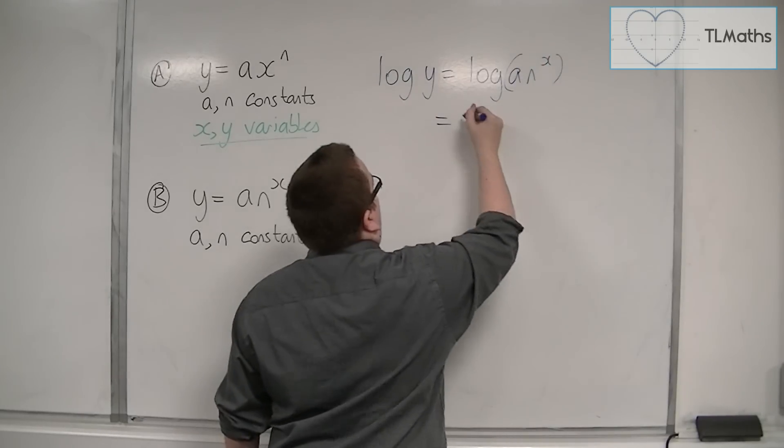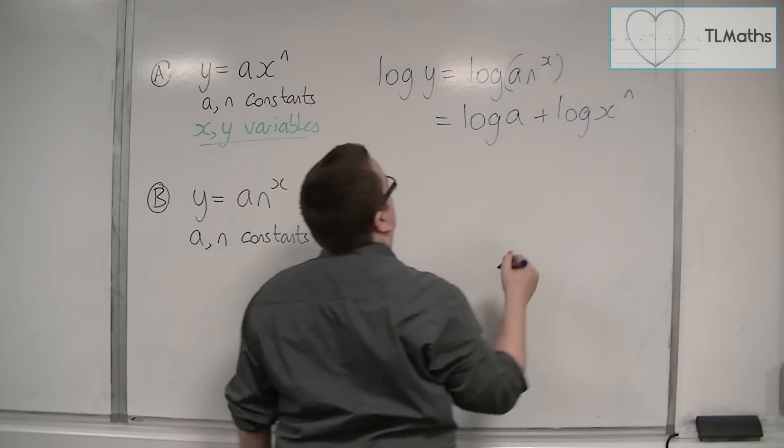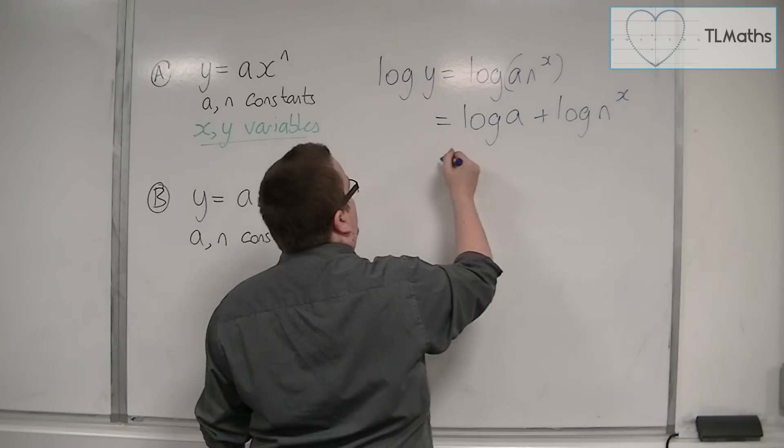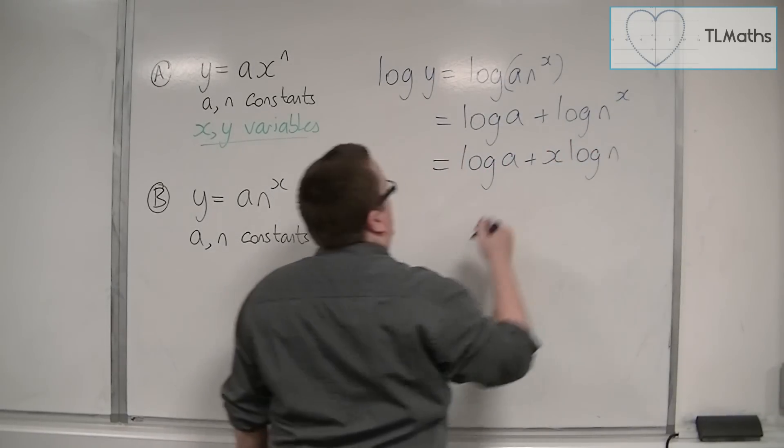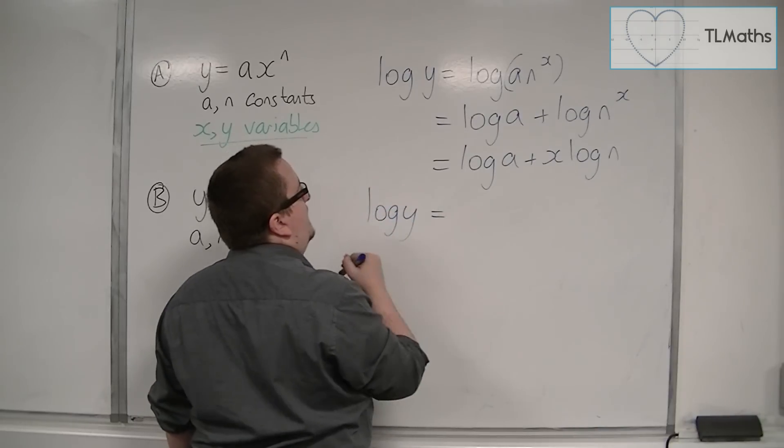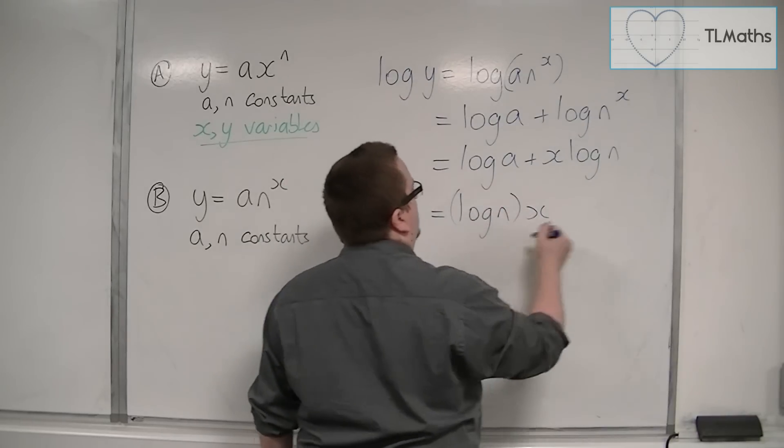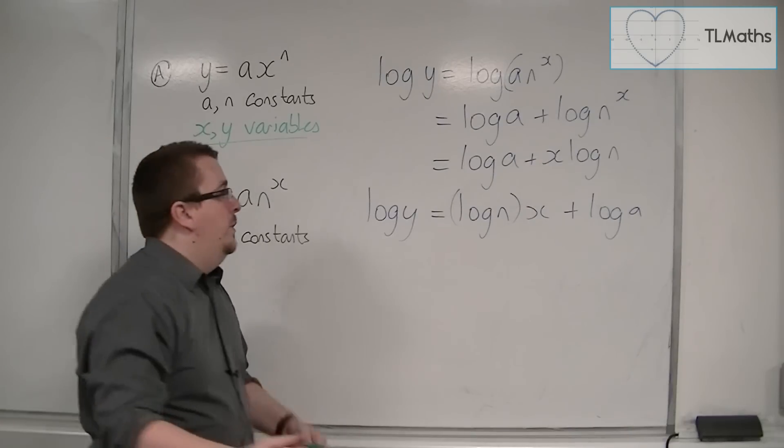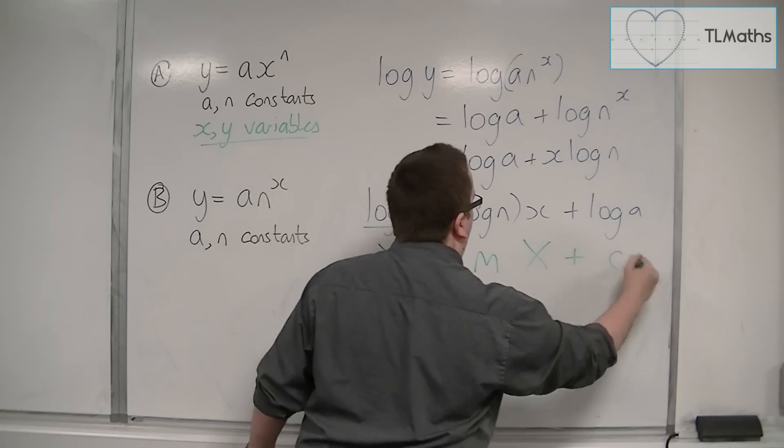I'm going to split that logarithm apart. That's n to the x. The x can come down to the front. And now I'm just going to rewrite that. So log y is equal to log n times x plus log a, so we can easily compare it with y equals mx plus c.